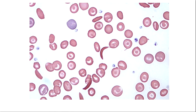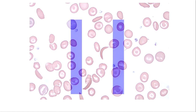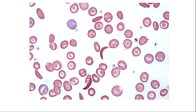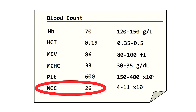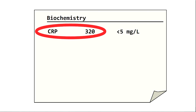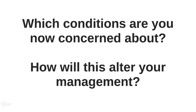You get a call from the lab — they've been looking at the blood you sent. Describe what you see. Sickle cells are present, and the red cells don't look very dense; they're quite spread out, which suggests anaemia. The lab informs you that the haemoglobin is 70, white cell count is 26 with a raised neutrophil count, and the CRP is 320. The other results are normal. What conditions are you now concerned about, and how will this affect your management?